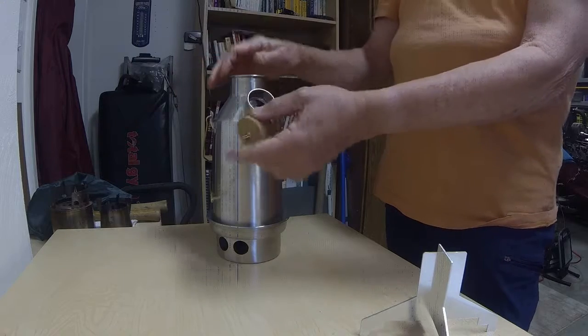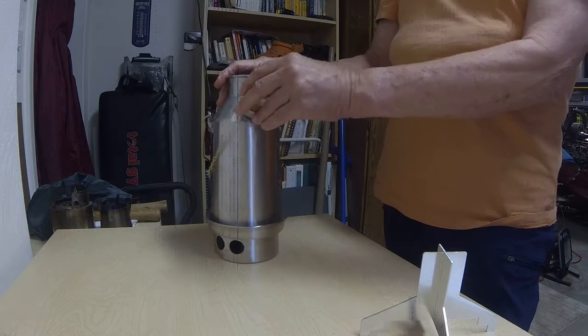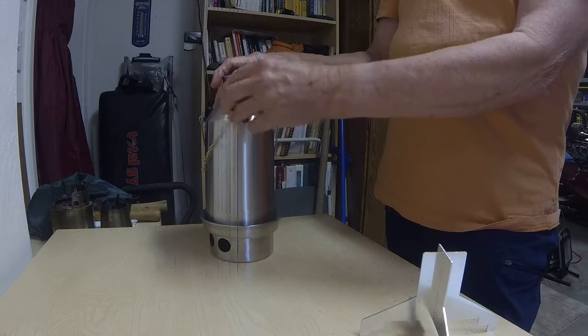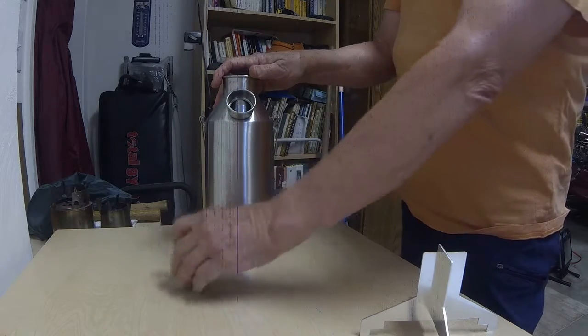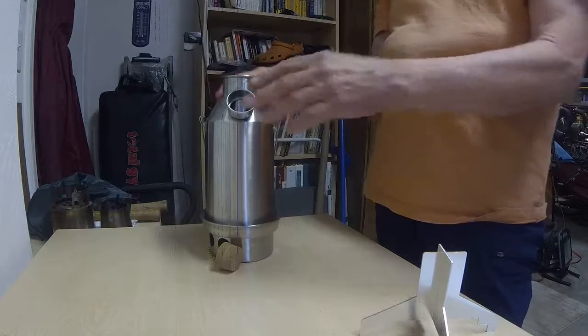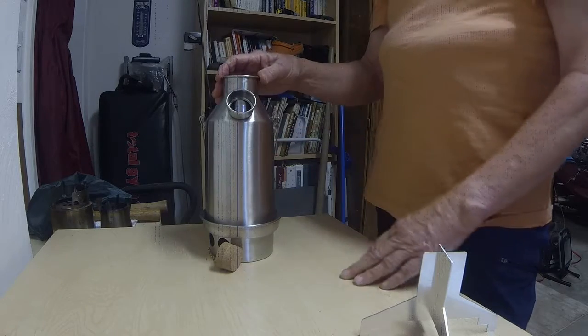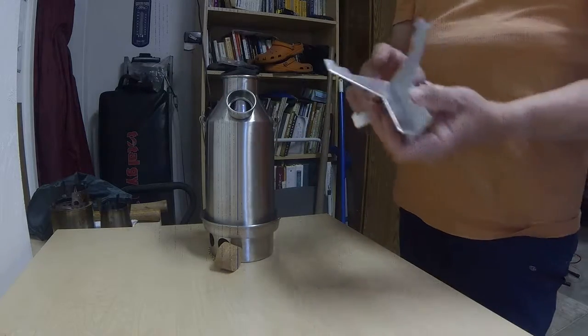The idea is you don't want to have this cork tightly in there during boiling because it will build up pressure. So you leave this off until you boil your water, and then you can put your cork in.